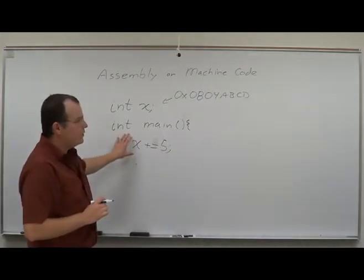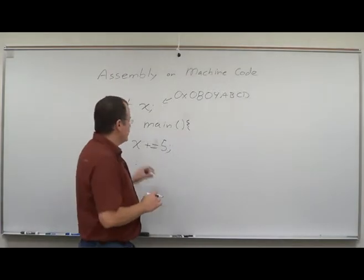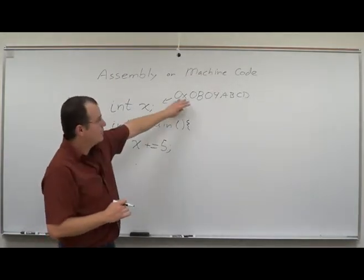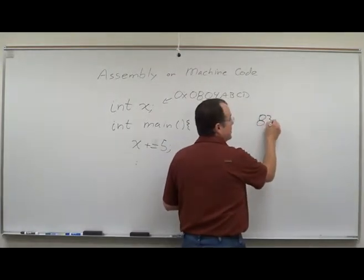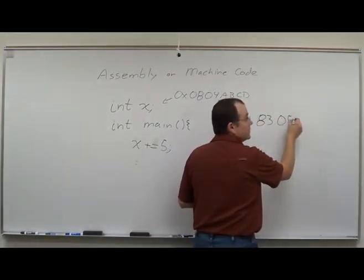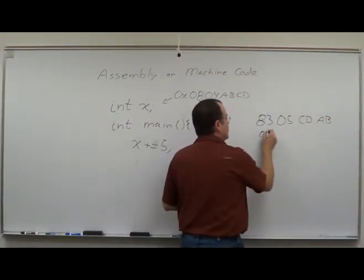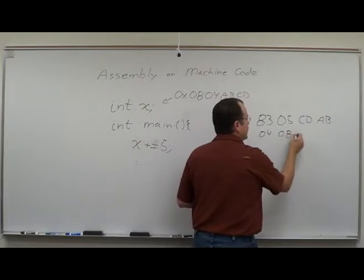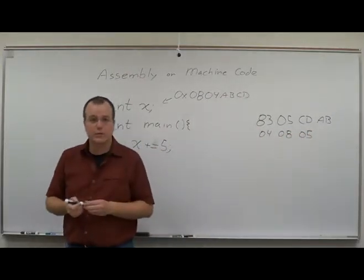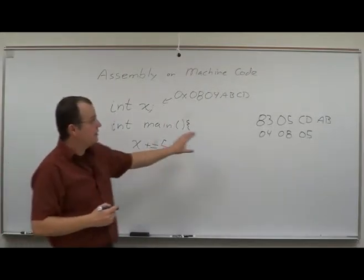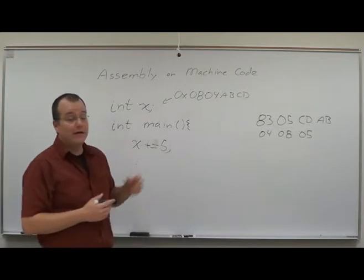Well what does plus equal 5 look like in memory? Well it turns out this operation for a variable that lives at that location is going to look like this: it's the number 8305cdab040805. It's pretty obvious, right? Clearly plus equals 5 is that number. It doesn't look that way to me either.